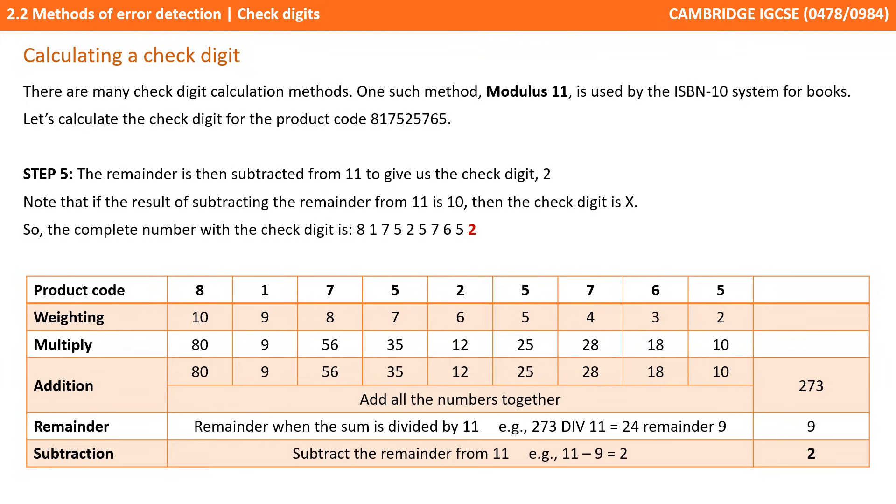Finally we subtract this remainder from 11. So 11 minus 9 equals 2 and that's our check digit. It should be noted if the result of subtracting the remainder from 11 is 10, then we use the Roman numeral symbol for 10 which is X as our check digit. But in this example it was 2, so our complete number with the check digit is 817525765 2.